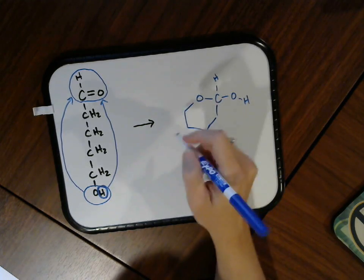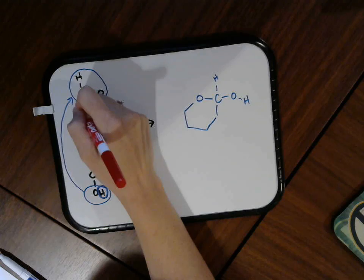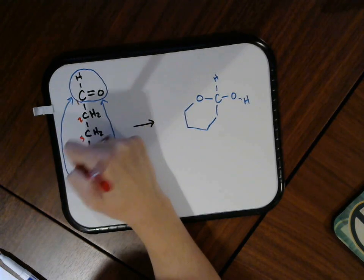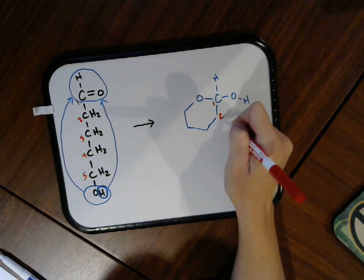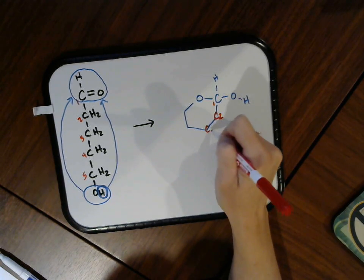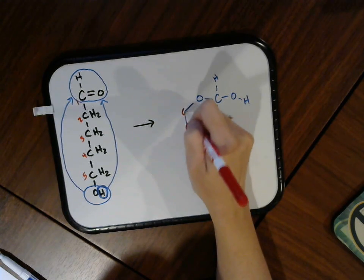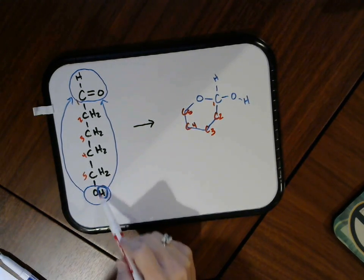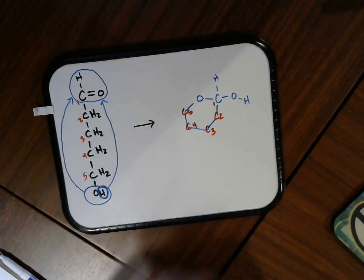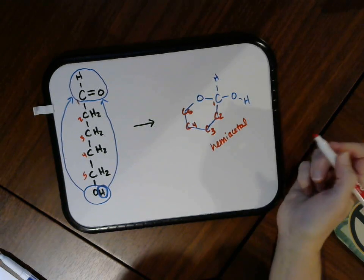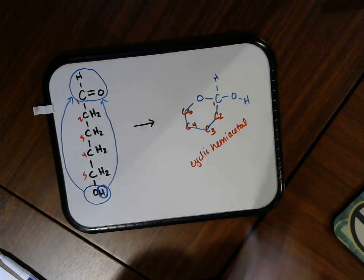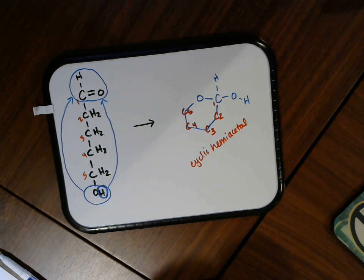If I number these, it kind of makes it a little bit easier. If I call this carbon one, two, three, four, five. Here's carbon one, that was the carbonyl carbon. Here is carbon two, we can explicitly draw it. Here's carbon three, carbon four, and carbon five. The carbon five was attached to the hydroxide group, it is now attached to that oxygen there. So this is a hemiacetal. It is now a ring, so we can call it a cyclic hemiacetal. We will see this a lot when we start talking about carbohydrate chemistry.